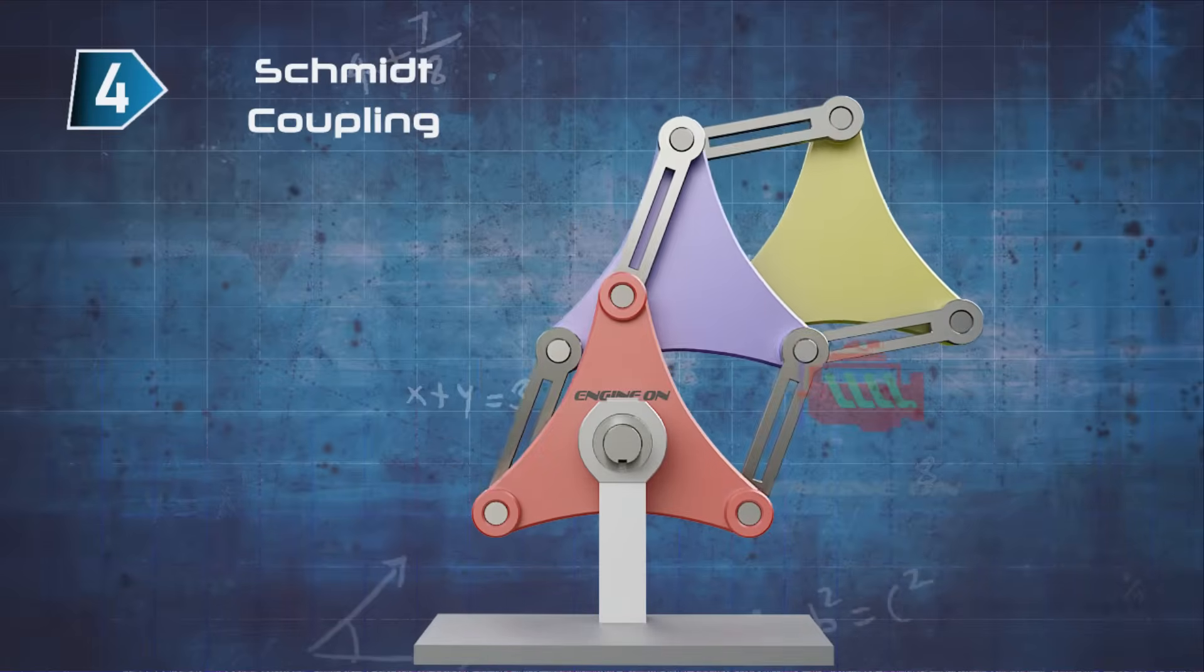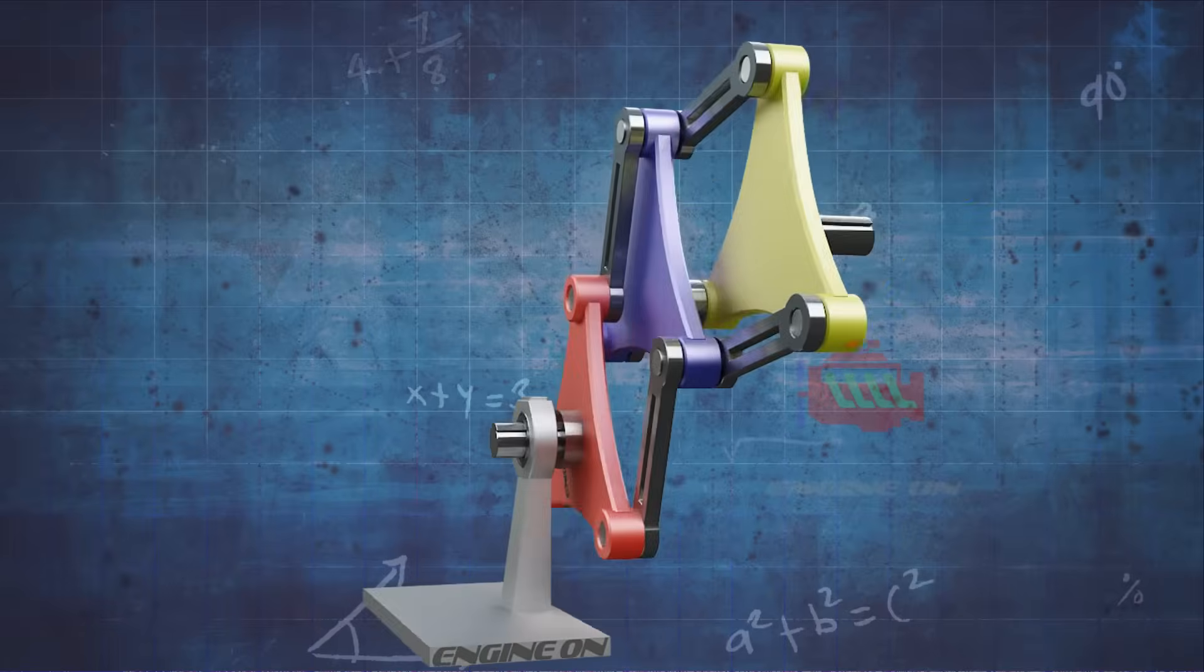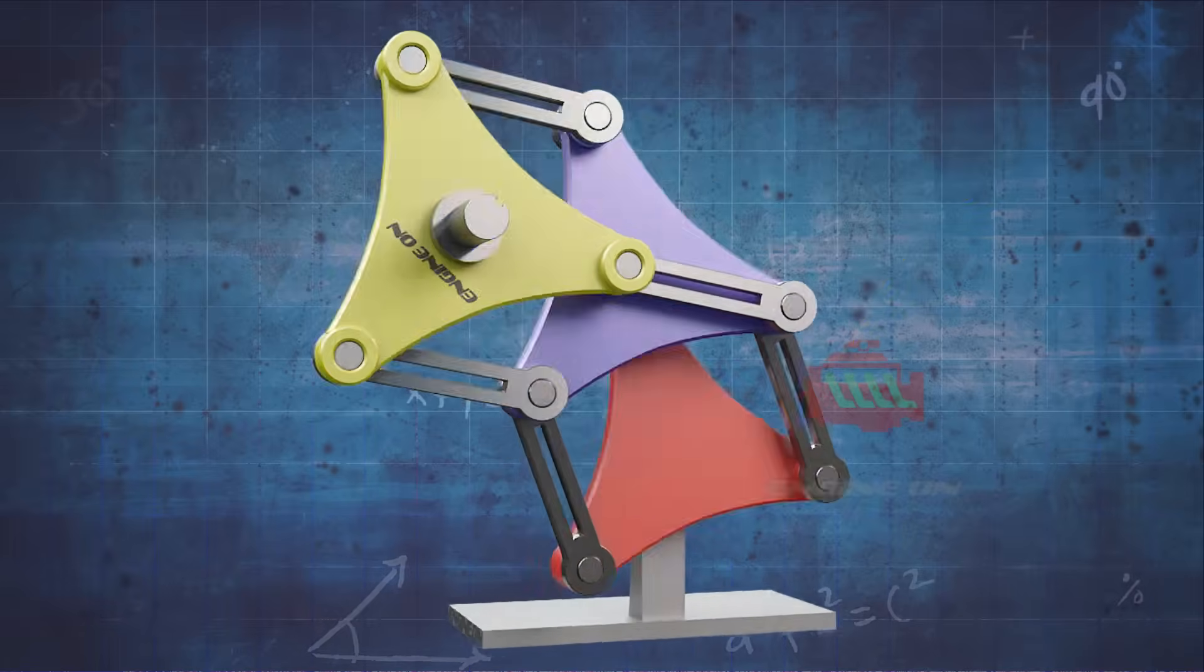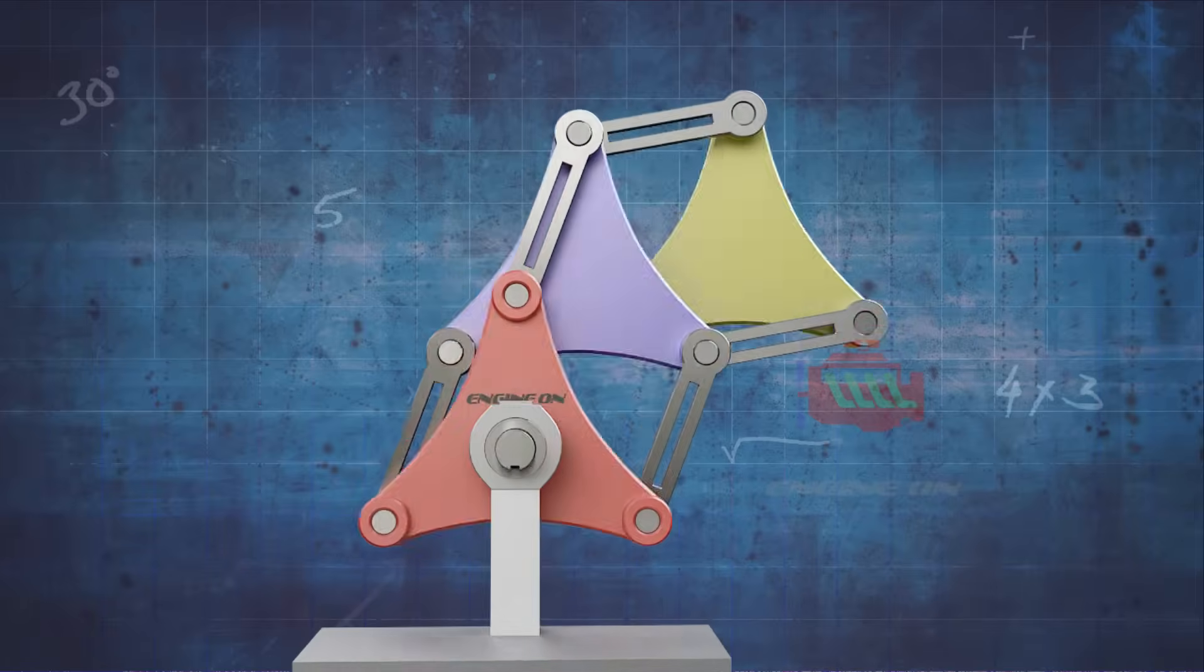A Schmidt coupling is a type of coupling designed to accommodate large radial displacement between two shafts, consisting of an arrangement of links and discs, three discs rotating in unison, interconnected.